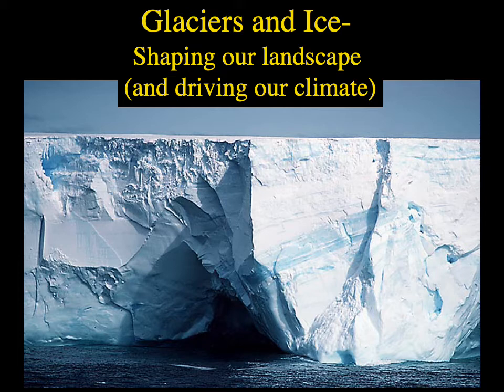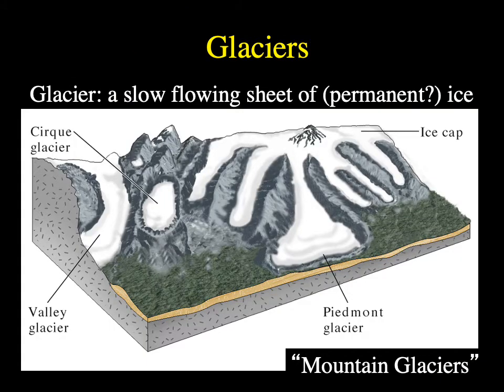What is a glacier? A glacier is a slow-flowing sheet of permanent ice. By 'permanent' I mean it lasts for multiple years — not just one year like a snowfall or a couple of months. We want a sheet of permanent ice lasting multiple years, and it is usually moving downslope or in an outward direction. So a glacier is a slow-flowing sheet of moving ice.